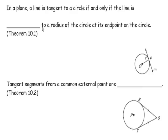Now we have theorems containing properties of these segments that are critical to understand for solving problems later in this unit. In a plane, a line is tangent to a circle if and only if the line is perpendicular to a radius of the circle at its endpoint on the circle. So PE is a tangent because it is perpendicular to OP at the point on the circle.